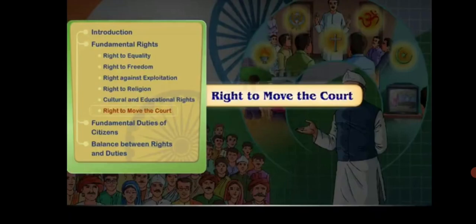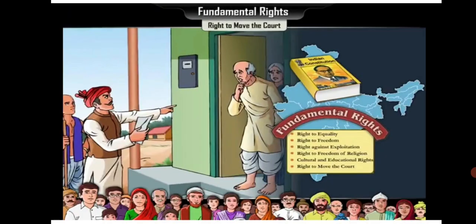Now let's learn about the right to constitutional remedies. In case of encroachment of fundamental rights, the Indian citizen's right to get judicial remedies is also a fundamental right. This is called the right to constitutional remedies. The constitution itself has provided for legal remedies in case people's rights get violated, making it a constitutional duty of the court to protect the rights of the people. Sometimes the rights guaranteed by the constitution may get encroached upon and we are unable to exercise them — this is called an infringement of our rights.